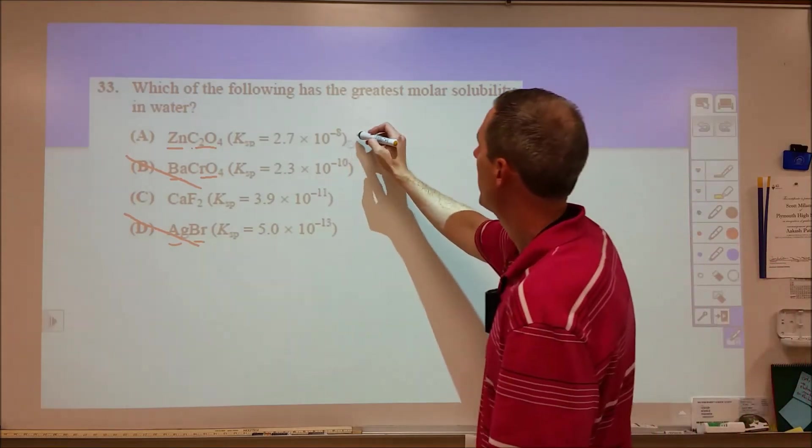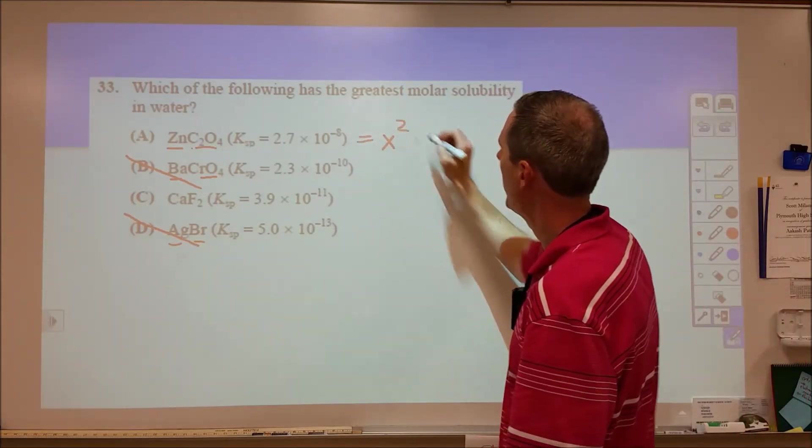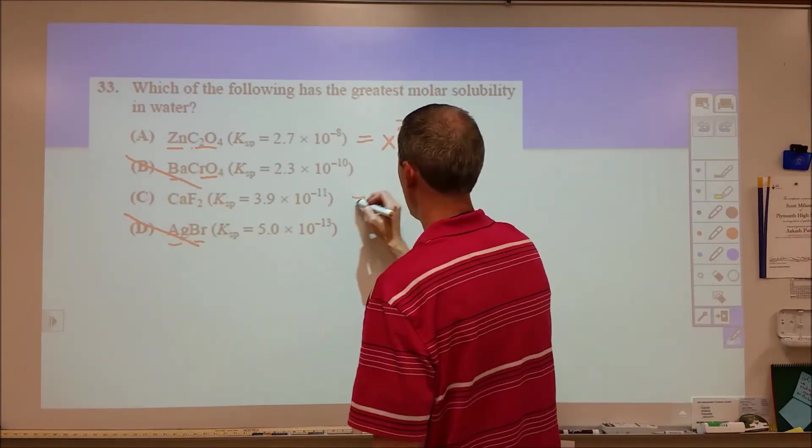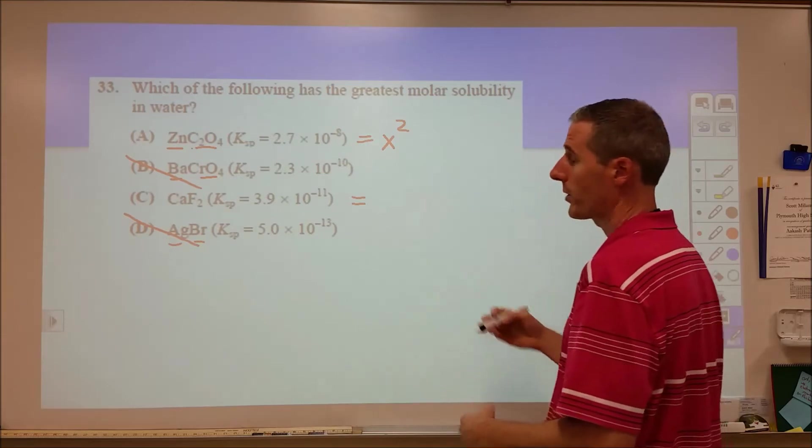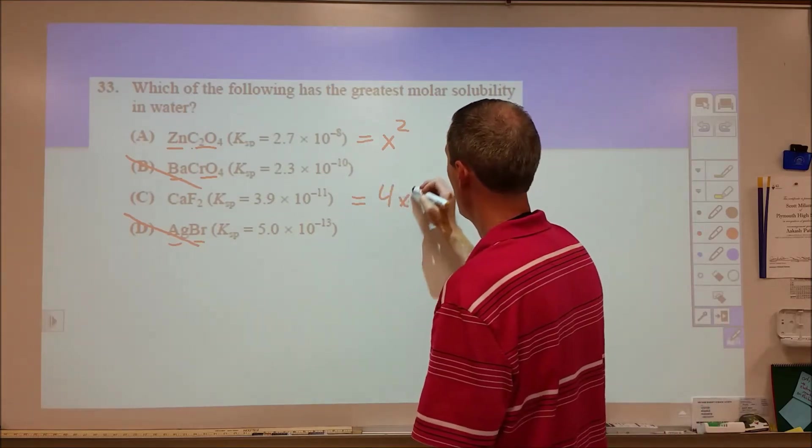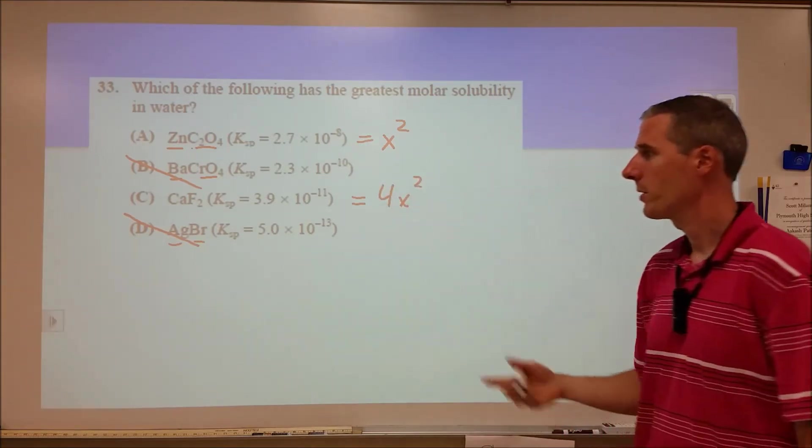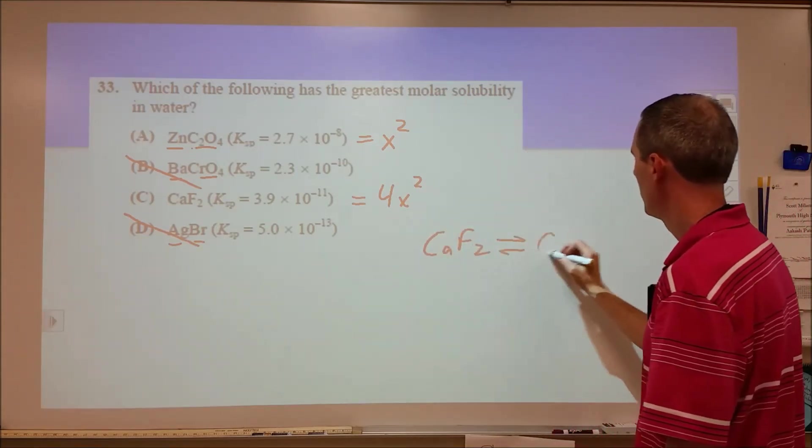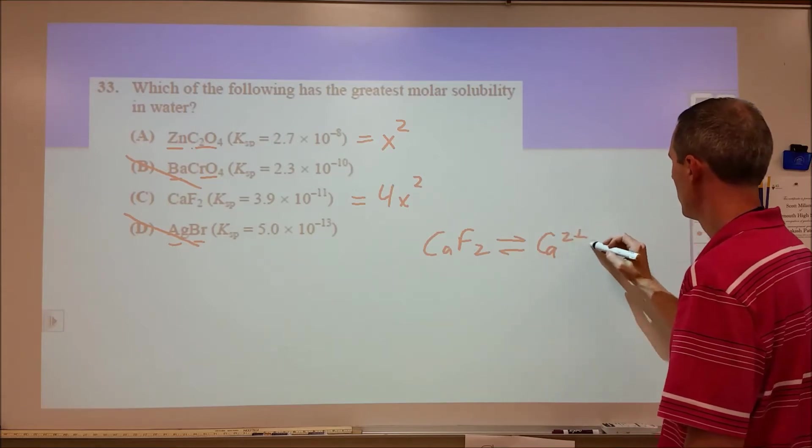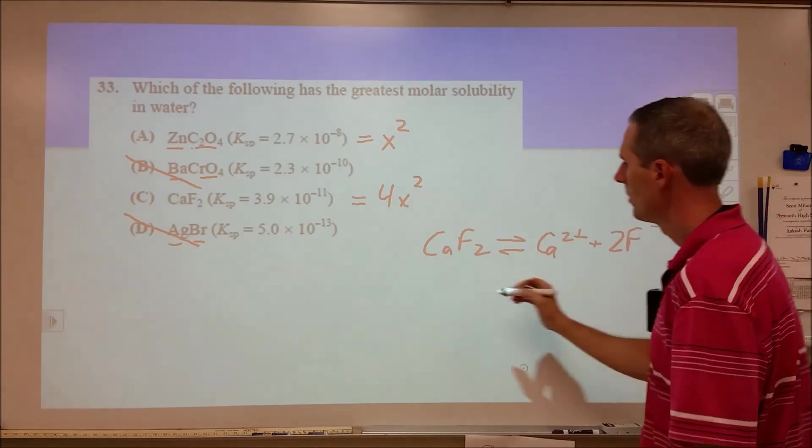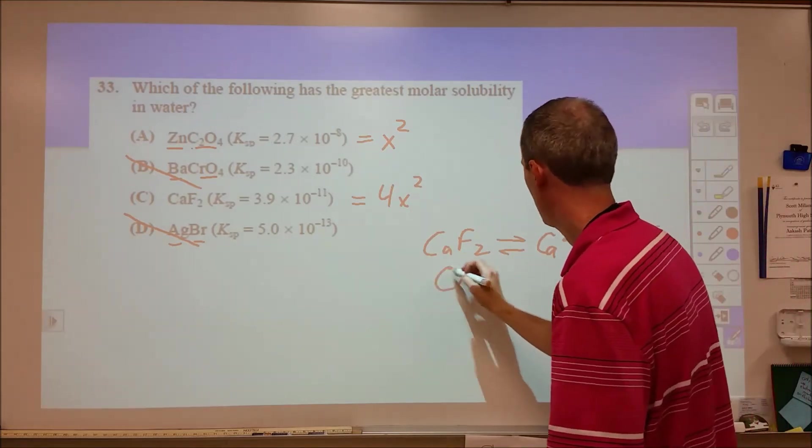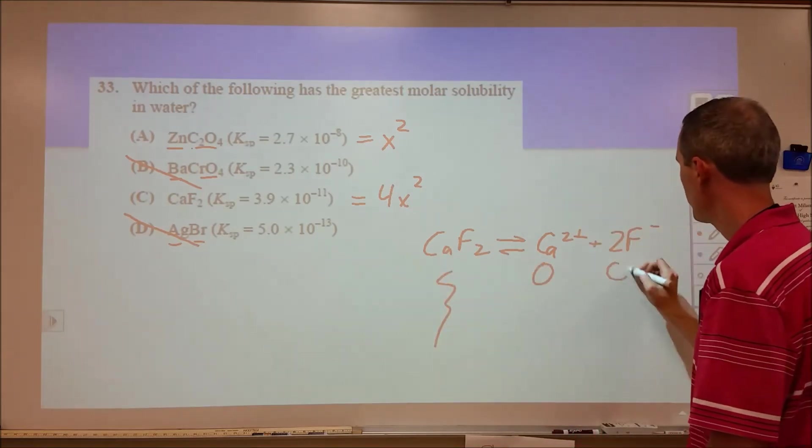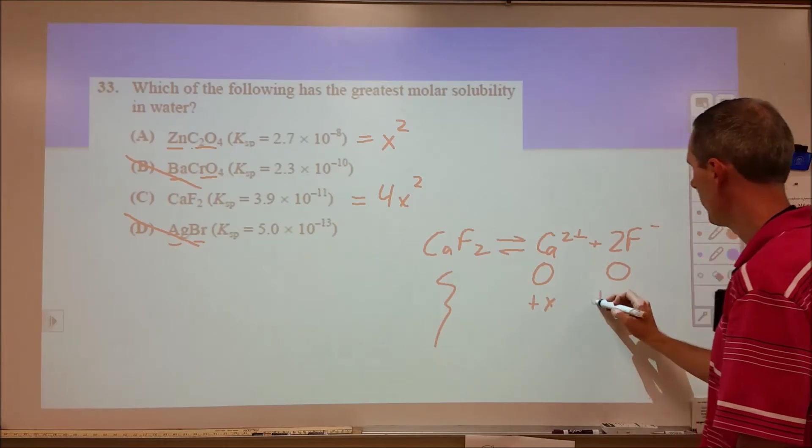What we can do is set this Ksp value equal to X squared, one for each of those ions. And this one, however, we need to set it equal to 4X cubed, which is 2X quantity squared times X. If we go through an ice chart for calcium fluoride, for instance, we set up our dissolution reaction. We're starting with zero of this and zero of this, ignoring this because it's a solid. We're adding X, but here we're adding 2X. And our K expression has a squared component because of that coefficient. So we get 4X squared times X squared.